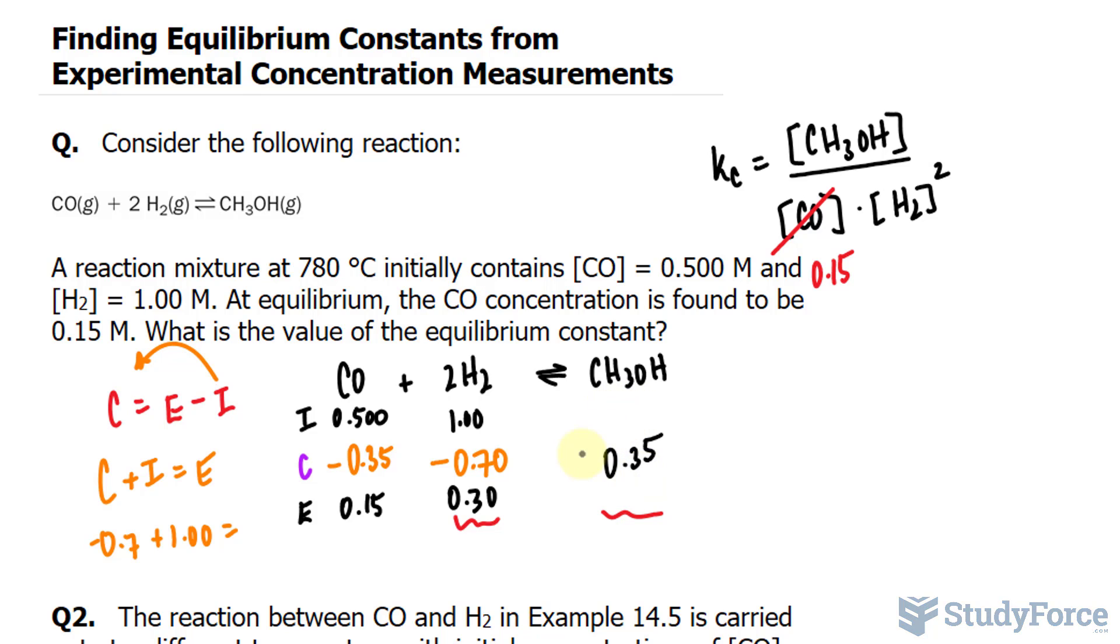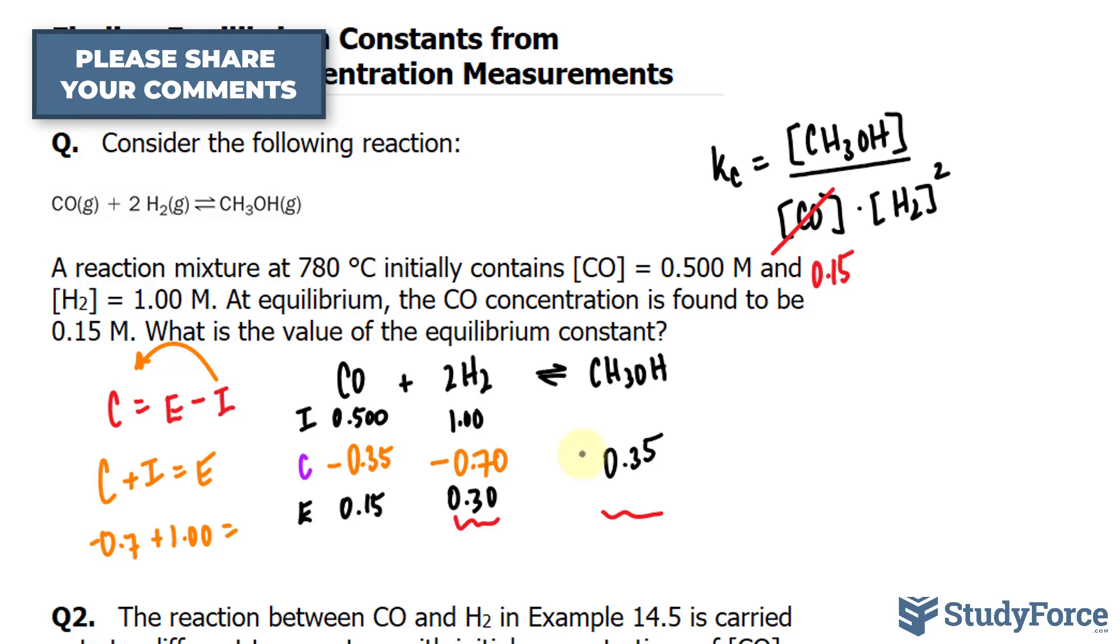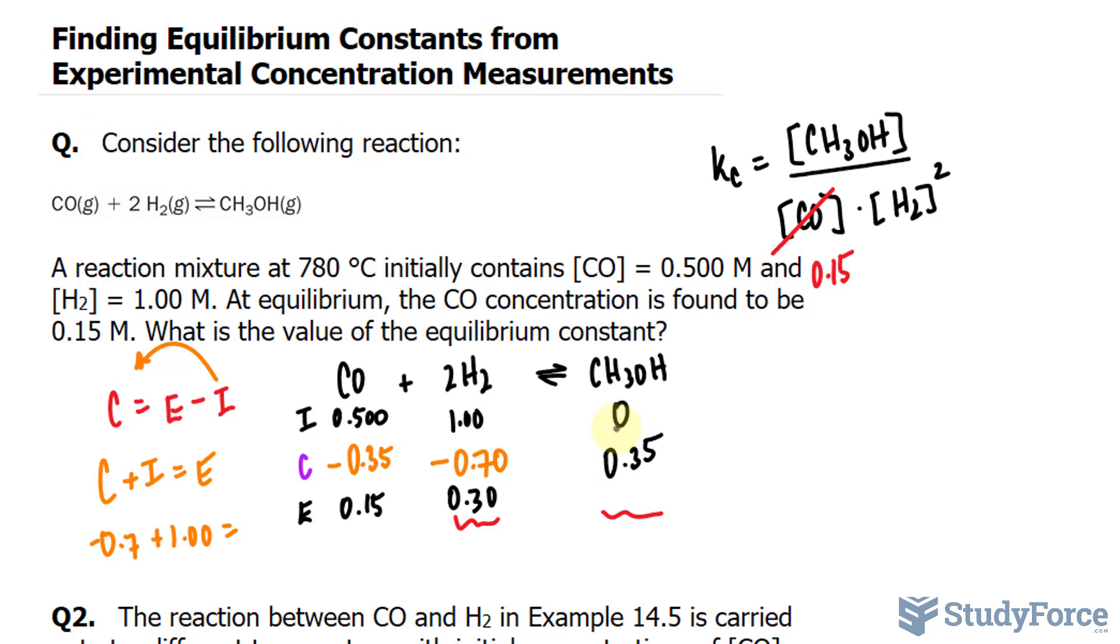To find the initial concentration, of course, at the very beginning, no product is made. So just by using some logic, that should be 0. And now we can calculate E using this same formula. 0.35 plus 0 is 0.35.